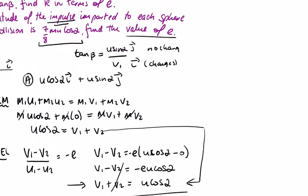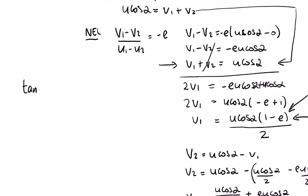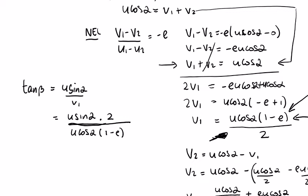What do we know about the tan of beta? We wrote it up top, tan beta equals u sin alpha over v1, which equals u sin alpha over this whole thing here. The 2 is going to come up on top, so it's going to be times 2 over u cos alpha times 1 minus e. My u's cancel, sine alpha over cos alpha becomes tan alpha, and I have a 2 on top. So I end up with 2 tan alpha on top and on the bottom just 1 minus e.